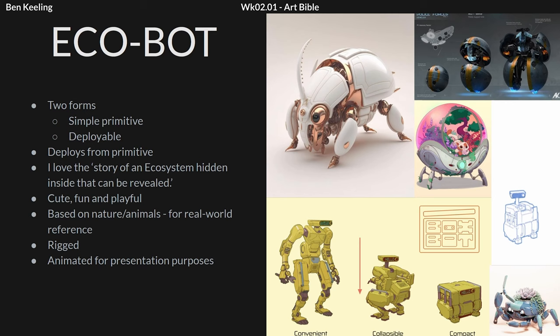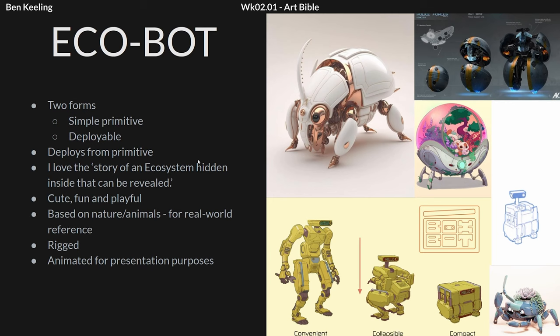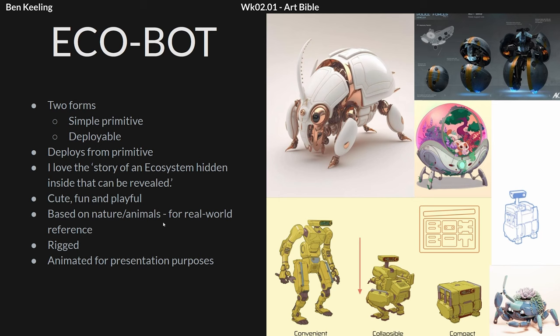At this stage I gather inspiration from 3D art, concept, and reference, and just get my notes down. I wanted the asset to have two different forms — a more simple primitive shape like a cube or sphere, and then it would deploy from that shape into the robot or animal mech. I also really liked this idea of having an ecosystem contained within the actual prop itself. I thought it could be cute and fun, based on nature and animals, to grab that real world reference and make the design unique. I also knew it would be rigged and animated for presentation.